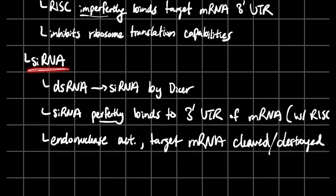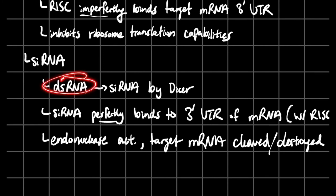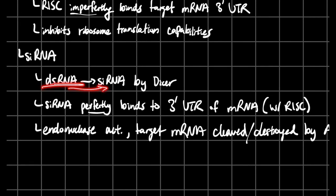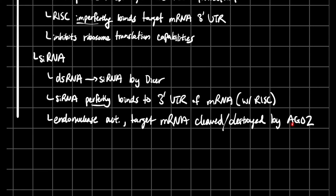For siRNAs — small interfering RNAs — the process is similar but slightly different. You start with a real double-stranded RNA, as opposed to those hairpin structures. DICER again processes it, this time from double-stranded to small interfering RNA. The siRNA combines with the RISC complex, and this time it perfectly binds to the 3' UTR region. Perfect binding activates AGO2, which is part of the RISC complex, and uses its endonuclease activity to actually cleave the mRNA, so you won't be able to have gene transcription.